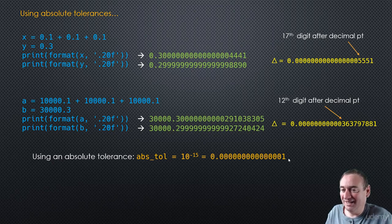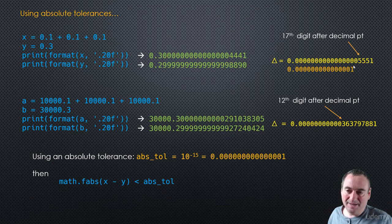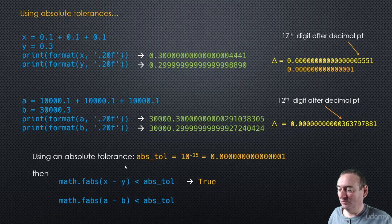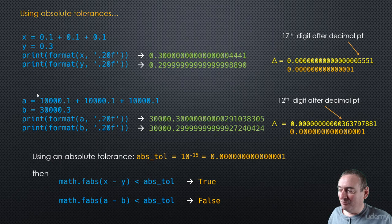That's where relative tolerances will come into play. But for now, using absolute tolerance: if we make this test that the absolute value of x minus y is less than the absolute tolerance — well the absolute tolerance is 10 to the minus 15. The first significant digit of the delta is at a higher position, which means this delta is less than the tolerance, so that will evaluate to true. But take a look at the second example where we look at the absolute value of a minus b — the delta is greater than this tolerance, so this will actually evaluate to false.